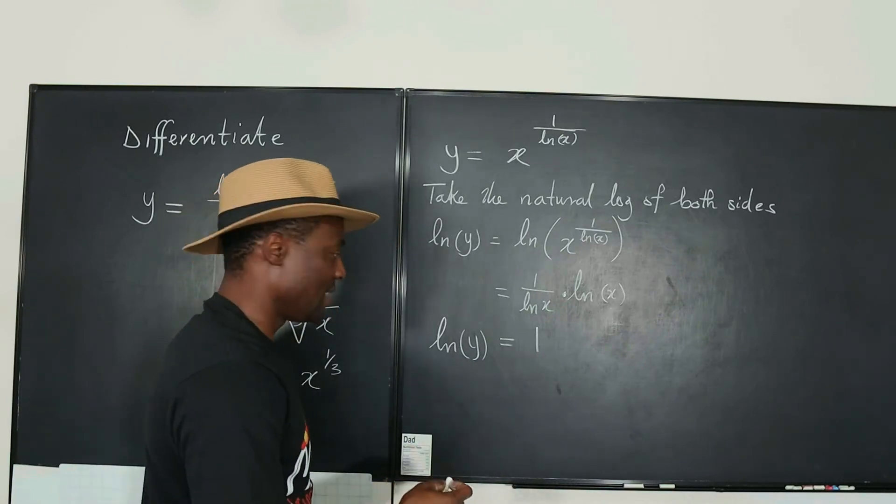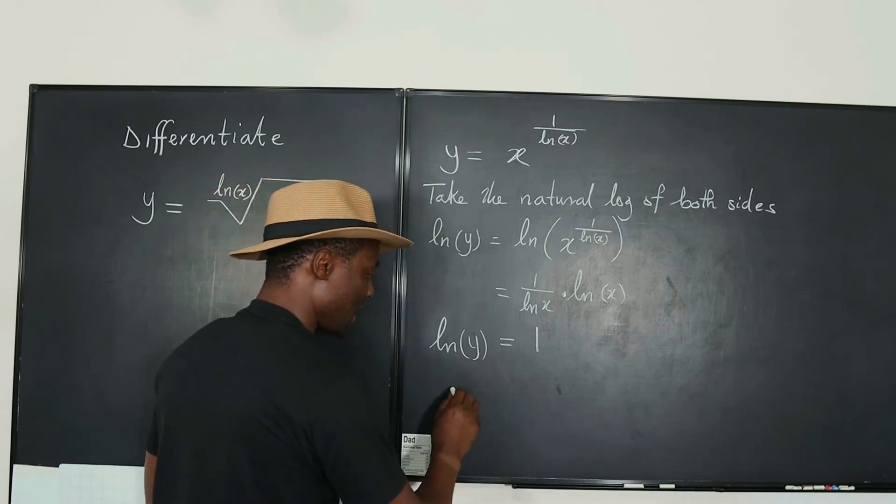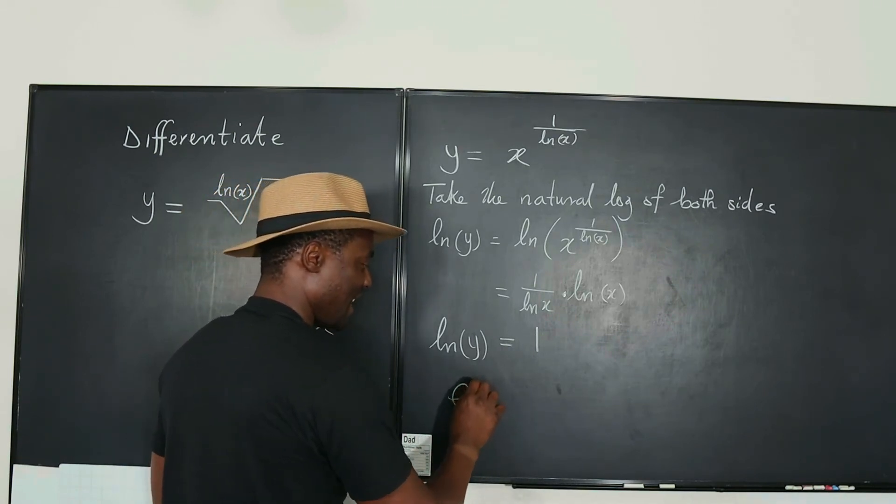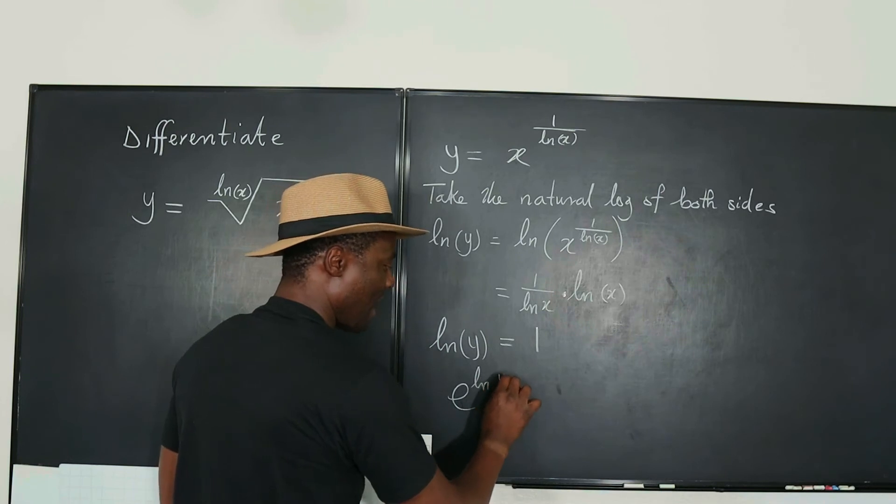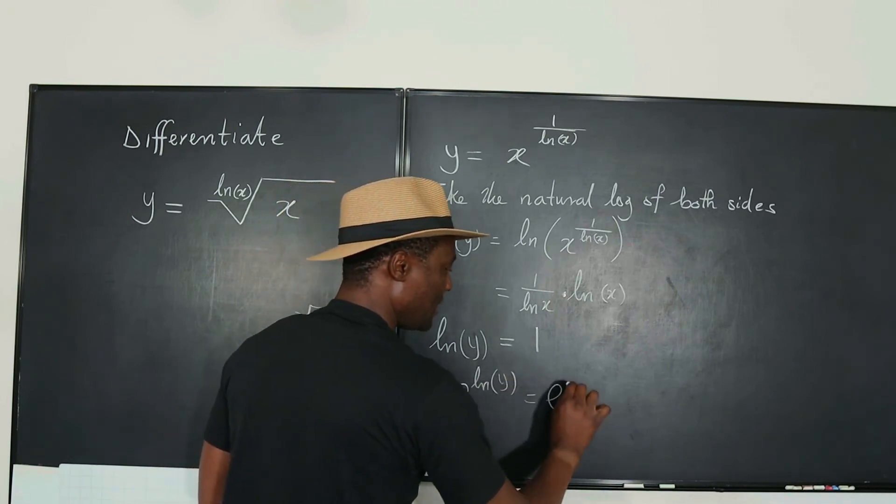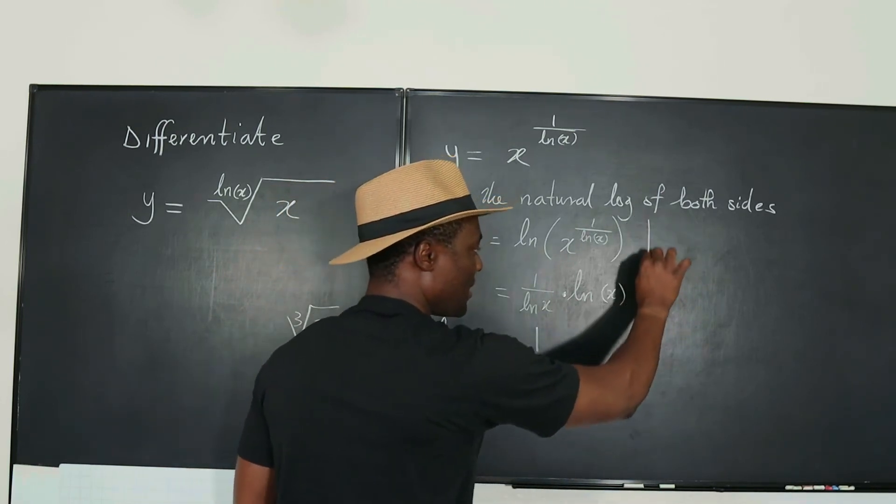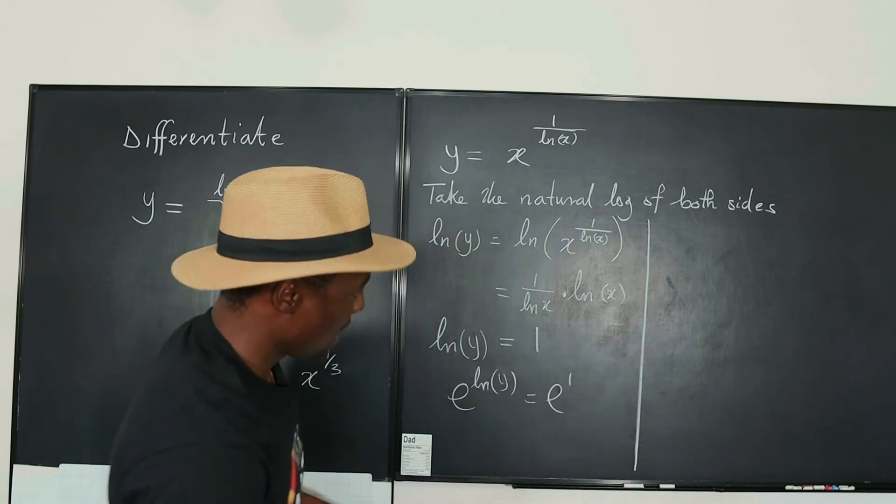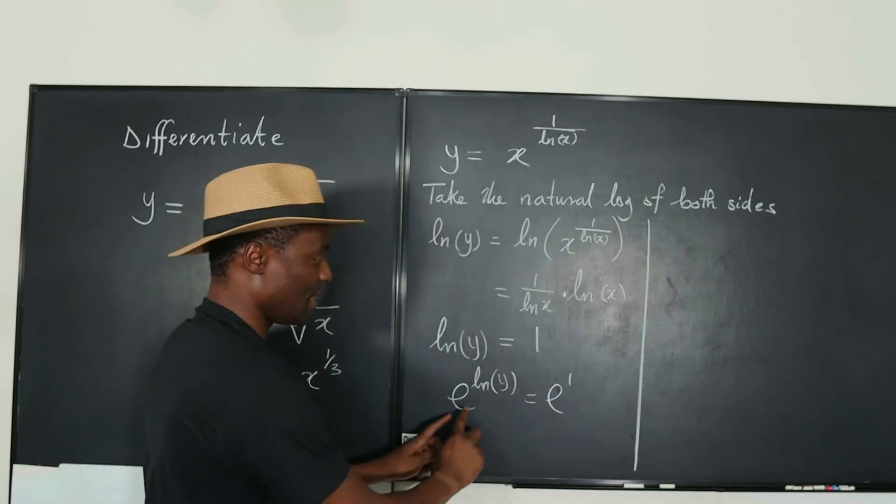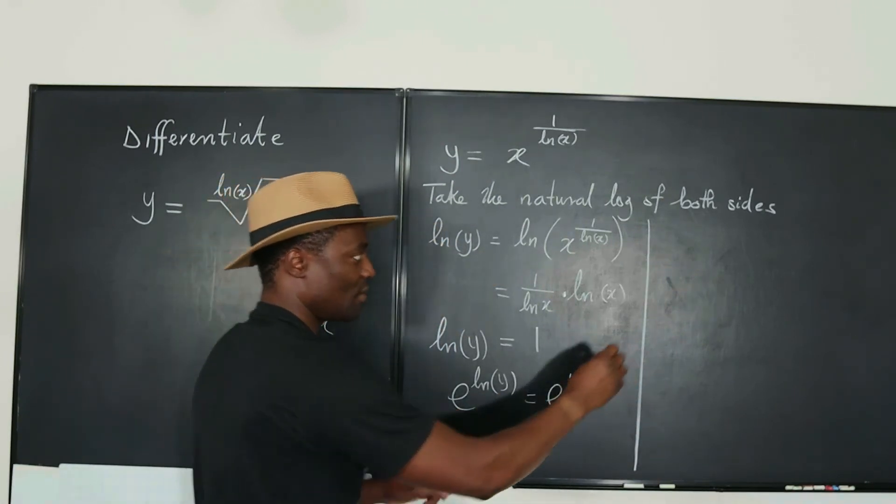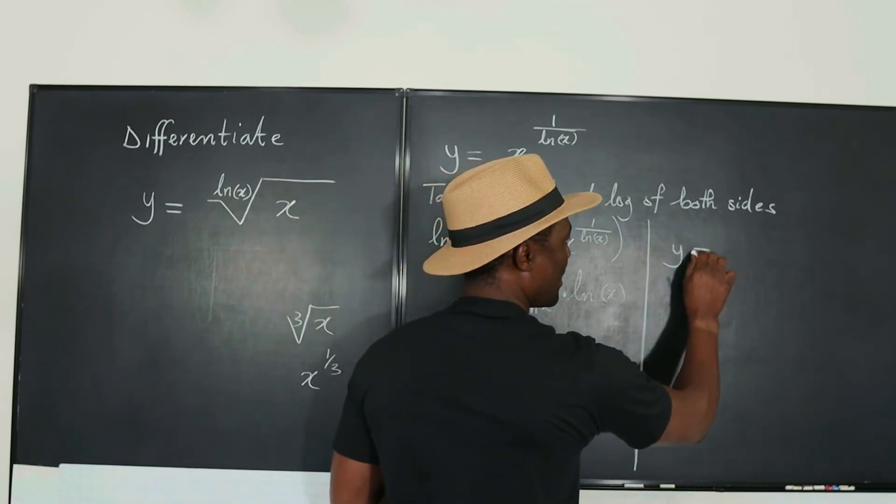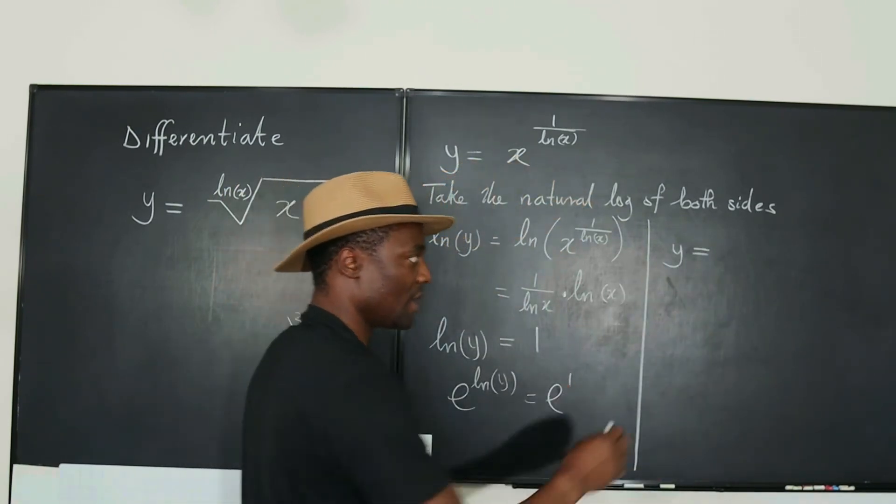Well you can take the e of both sides. So we know that e to the natural log of y will be e to the 1. I'm going to continue my work here. And what do you have? Well this is going to give us, this would take this out and you have just y is equal to e to the 1, that's e.